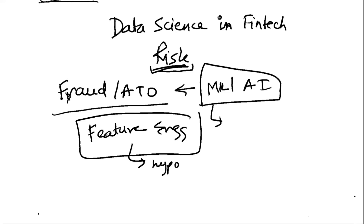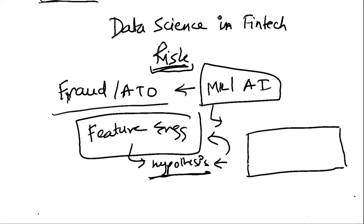First, feature engineering is going to be hugely important — and it needs to be hypothesis-driven. Your fraud analysts have significant understanding of fraudulent behavior, and you want to capture that in complex, intertwined hypotheses and features. For example, a person who works in a bank's ACH clearinghouse capacity would have very strong hypotheses about fraud patterns.